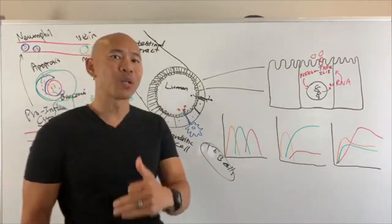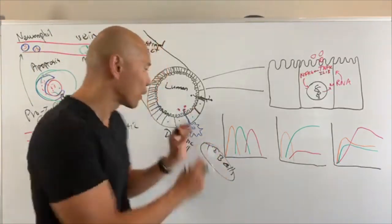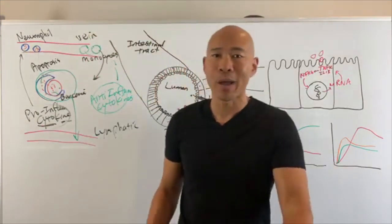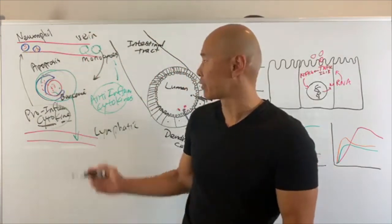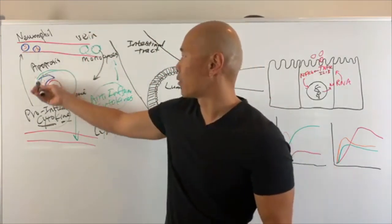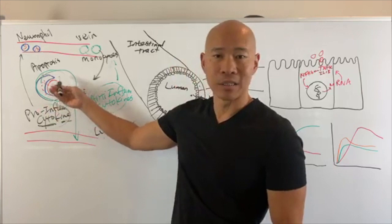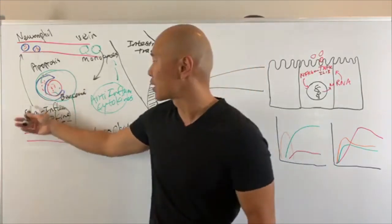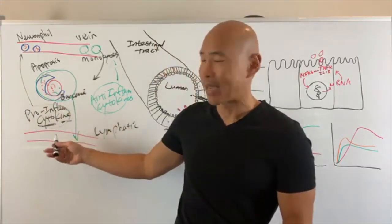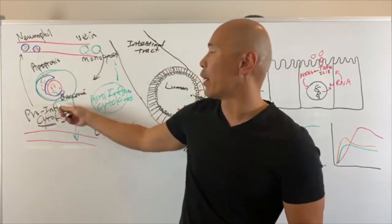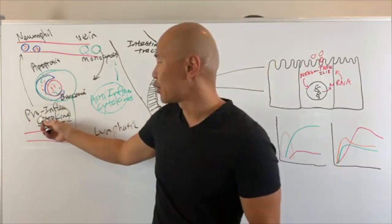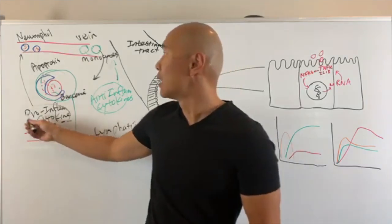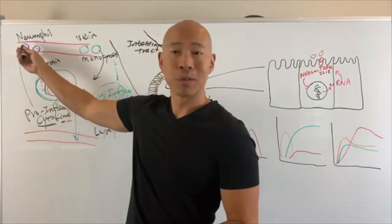Certainly if you already have leaky gut, this process may go a lot faster and make it easier for you to develop reaction and inflammation. But still, even without leaky gut, your body can still react to things — especially if your immune system is already reactive. Why would it be reactive? Well, if you have infections, you have other things that can trigger the same inflammation where pro-inflammatory cytokine text messages are sent to the immune system.